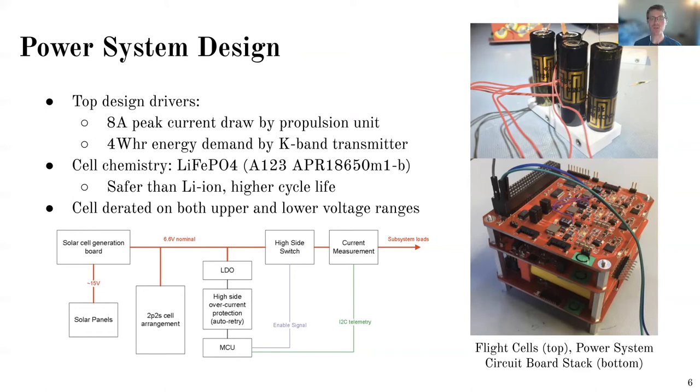And then their cycle life is higher just off the shelf, so before any derating. So once we did get this cell, we did additionally derate it. So we took the upper bound voltage. So the specified upper bound voltage was 3.6 volts, and the lower bound was around 2 volts. So we essentially brought both those ranges in to give us a little headroom on the bottom, so we're never going to 100% depth of discharge. And then the upper end is lowered as well, and that increases the cycle life.